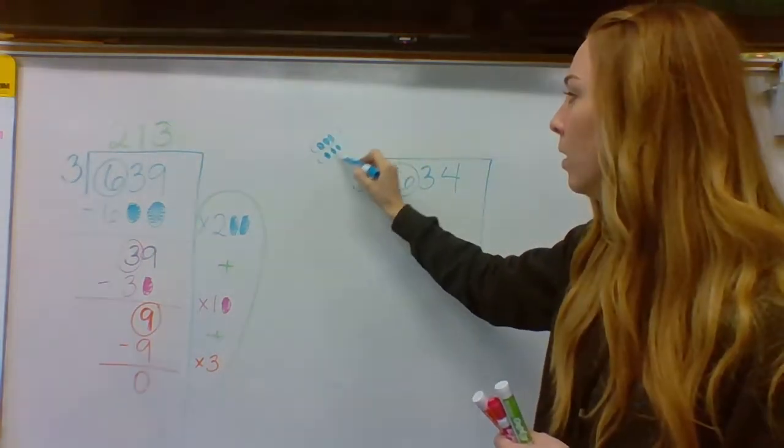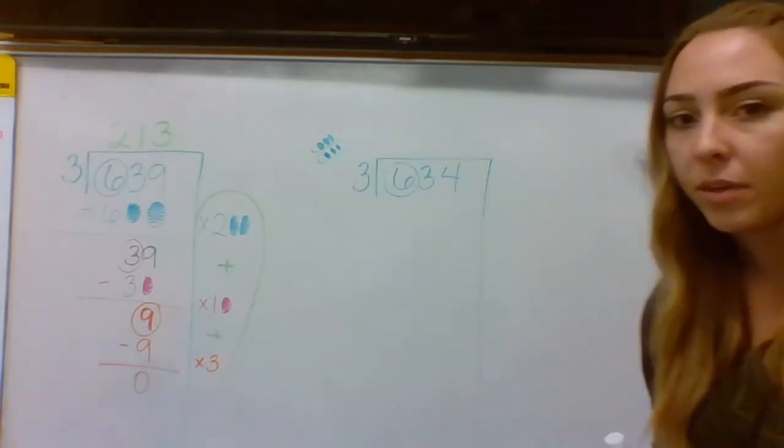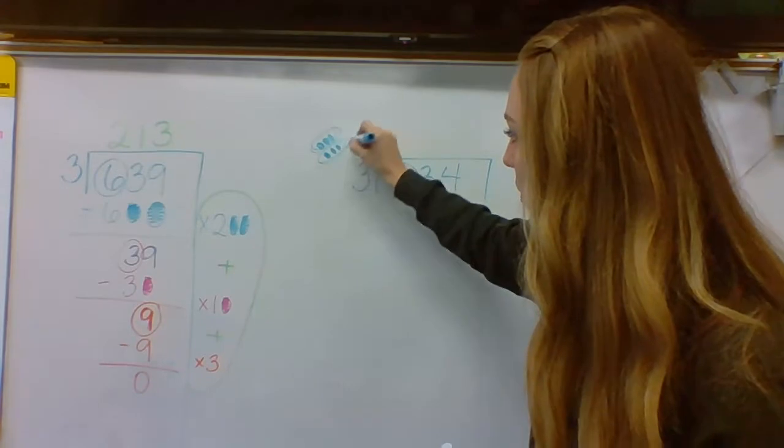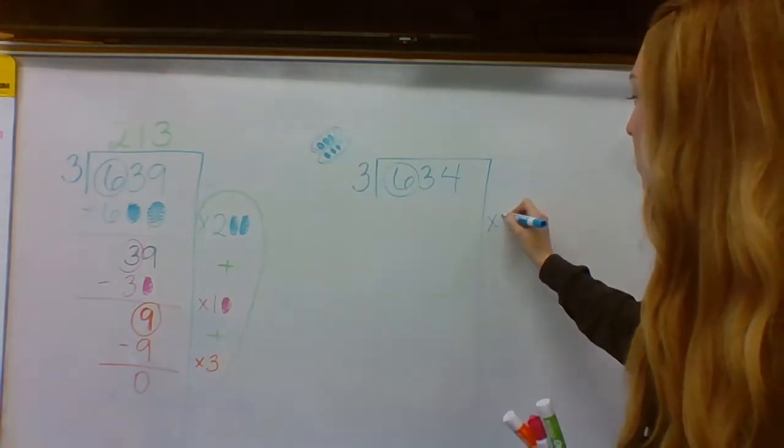And circle groups of three. One, two, three. One, two, three. How many groups of three are there? Here's one group. Here's two groups. Two groups of three.